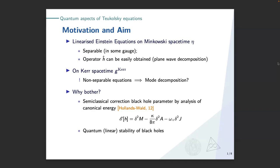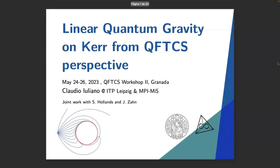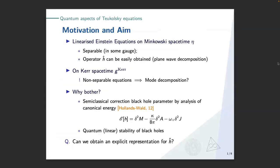Also, if you want to address questions like: is a black hole stable under quantum gravitational perturbations? — you need to find an explicit representation of these operators. So the question is: can we do that? Can we find it? The answer is clearly yes.